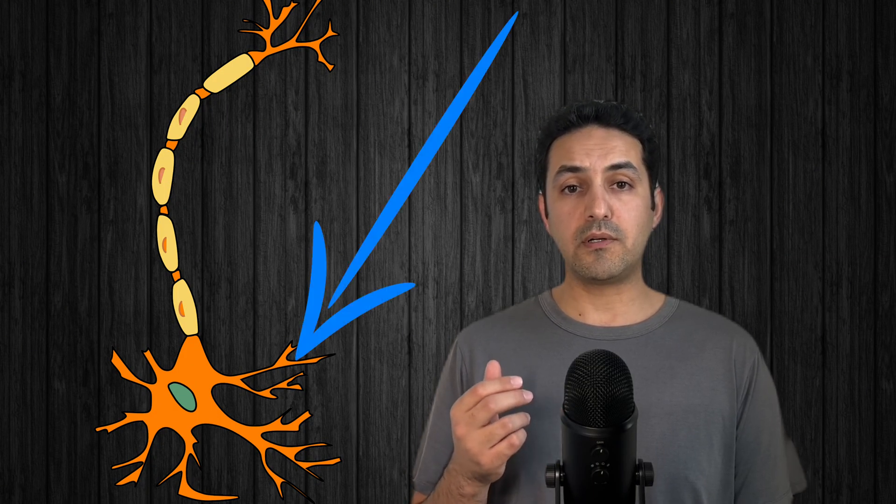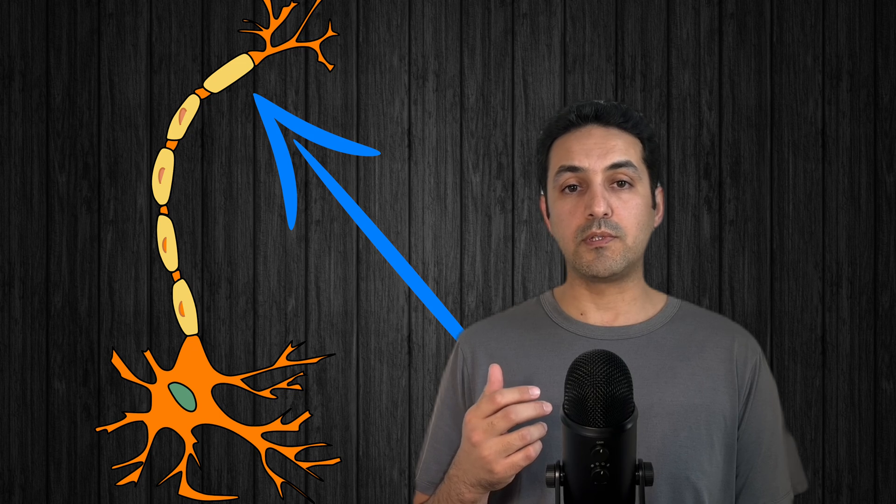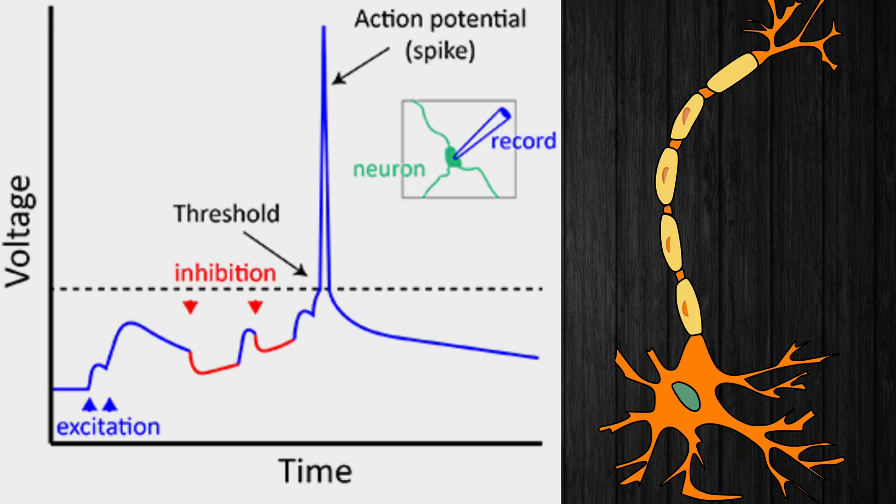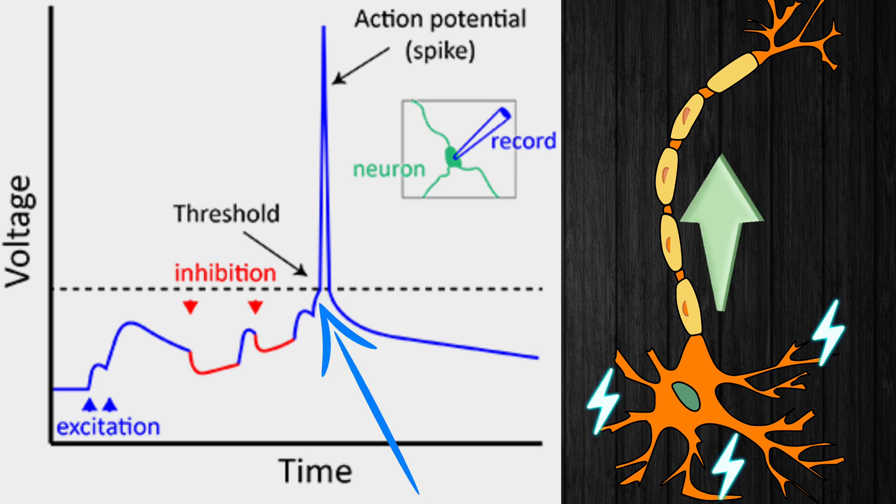Each neuron receives input from other neurons through dendrites and sends output to its axons. When a neuron receives enough excitatory signals from other neurons, the total input reaches a critical threshold, triggering the neuron to spike or fire.